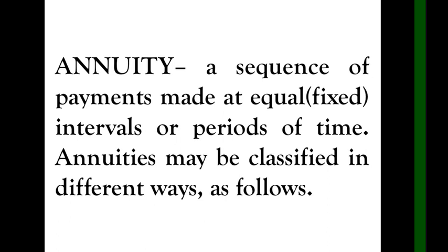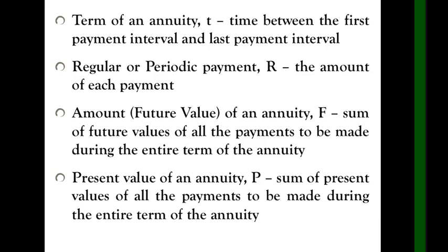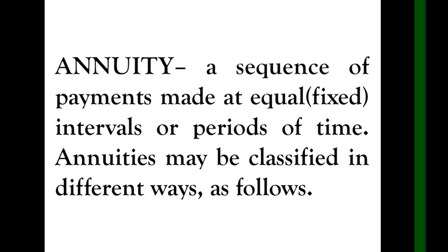First, let's define what annuity is all about. When we are talking about annuity, a sequence of payments made at equal or fixed intervals or periods of time. Annuities may be classified in different ways as follows. When you say annuity, this is a sequence of payments that you pay. It can be every year, every six months, every quarter, or every month. It has intervals, and these intervals are fixed and equal. So that is what we call annuity.